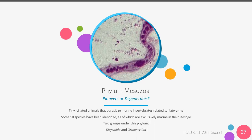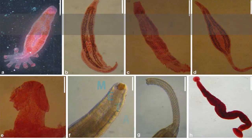Phylum Mesozoa are tiny ciliated animals that parasitize marine invertebrates, related to the flatworms. Some 50 species have been identified, all of which are exclusively marine in their lifestyle. There are two groups under this phylum: we have the Dicyemida and Orthonectida. Mesozoa were once thought to be evolutionary intermediate forms between protozoans and metazoans, but now they are thought to be degenerate or simplified metazoa.